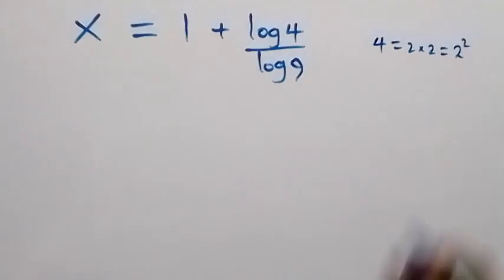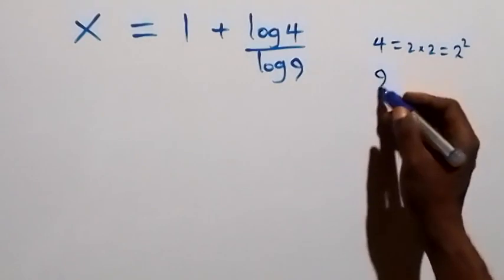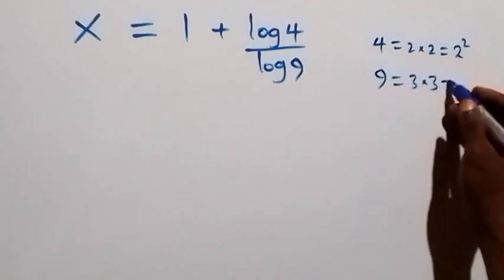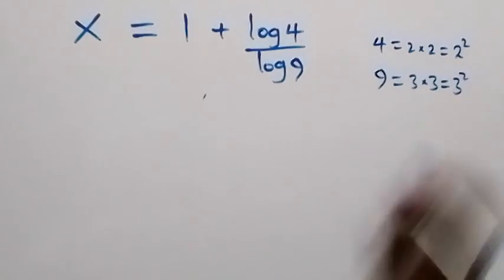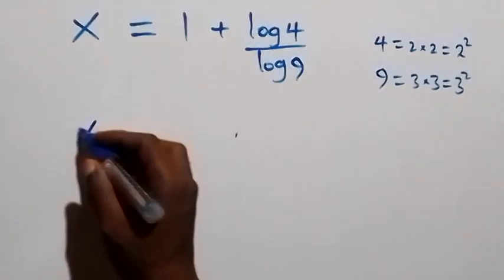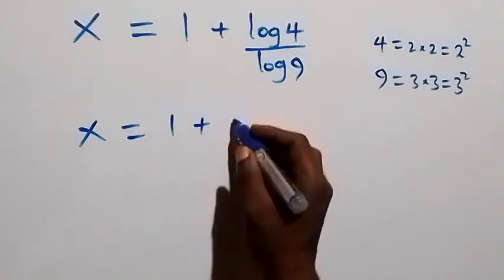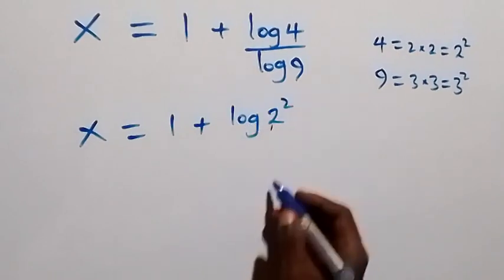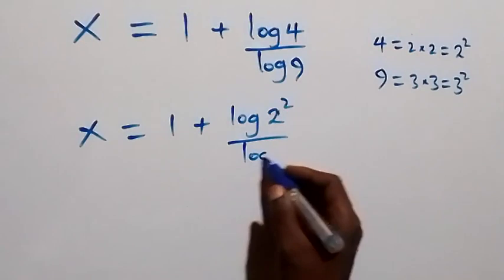Also, 9 can be written as 3 times 3, which is 3 squared. And 4 can be written as 2 squared. So what we have here becomes x equals to 1 plus log of 2 squared over log of 3 squared.